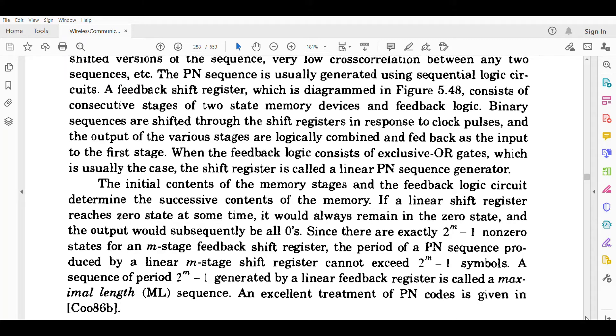If a linear shift register reaches the zero state at some time, it would always remain in the zero state and the output would subsequently be all zeros. Since there are exactly 2 to the power m minus 1 non-zero states for an m-stage feedback shift register, the period of a PN sequence produced by a linear m-stage shift register cannot exceed 2 to the power m minus 1 symbols.